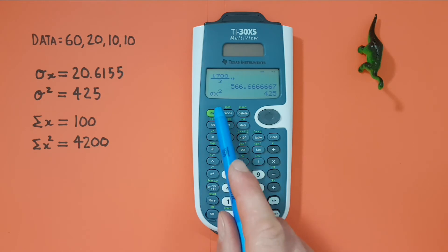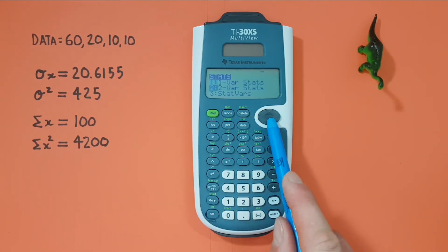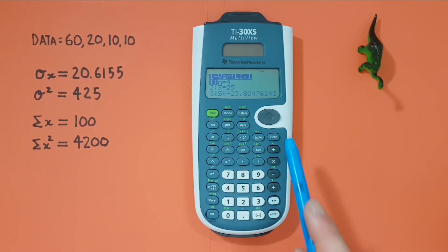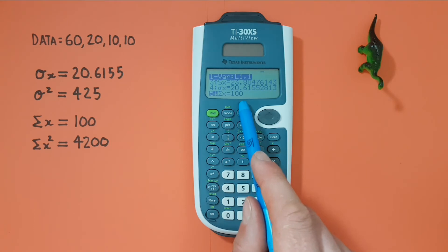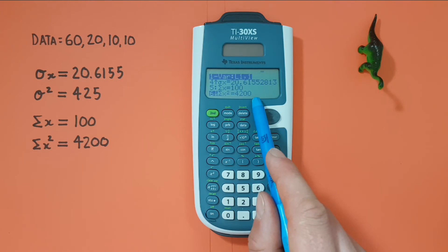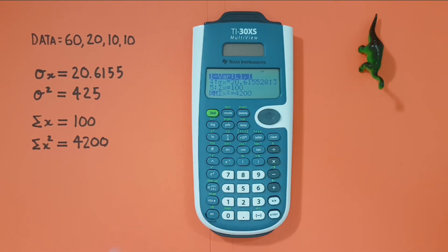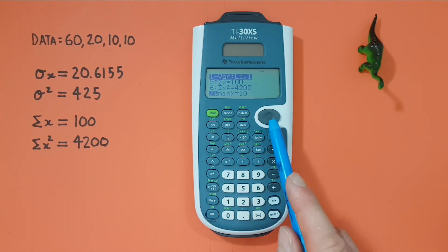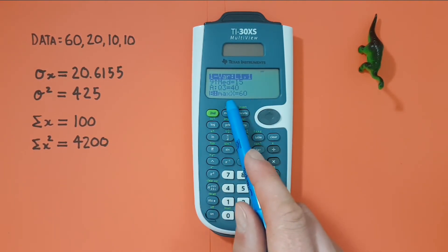We can go back to our stats again and continue scrolling down. We have a sum of 100 and a sum of squares of 4200. Continue scrolling and we'll find we have a minimum value, a first quartile, a median value, a third quartile, and a max value in this list as well.